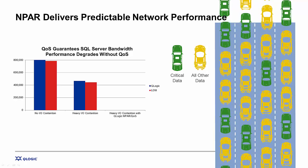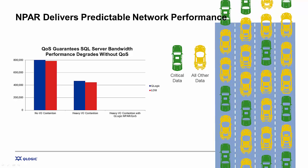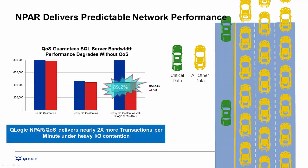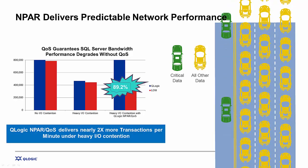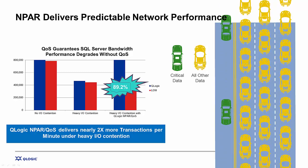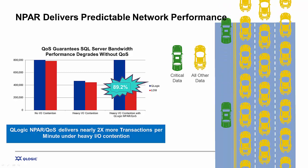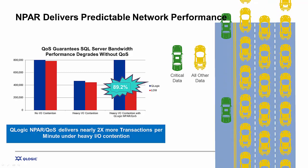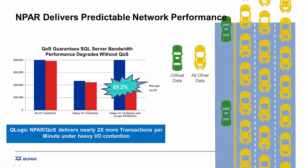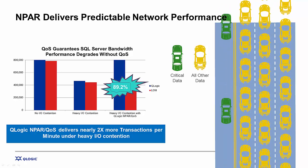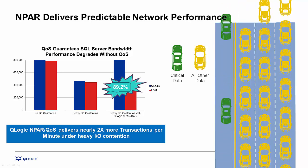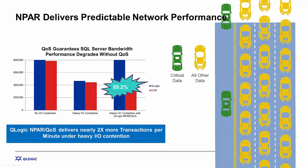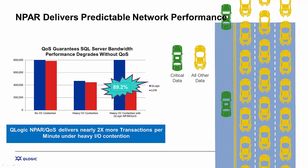The IT phone starts to ring because those critical applications have slowed down. By implementing N-PAR, dedicated lanes can be carved out for critical applications, allowing them to run at full line rate all the time. This capability is built into all the HPE and Qlogic flexible network adapters and is a simple configuration change by the IT administrator. Enabling N-PAR on critical applications allows them to run up to two times faster when there's heavy I/O contention.